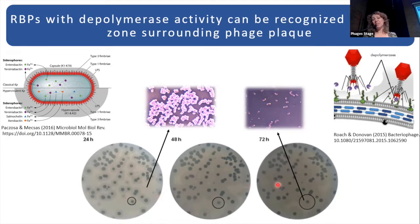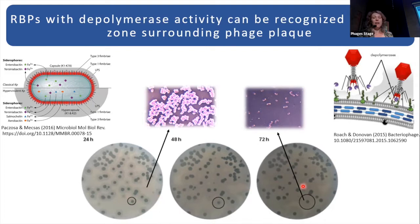The halo zone will be growing in diameter, but the plaque will stay the same size during the time of incubation. This halo zone is the effect of the depolymerization of the capsule, which allows the phage to gain access to the surface and proceed with phage propagation.